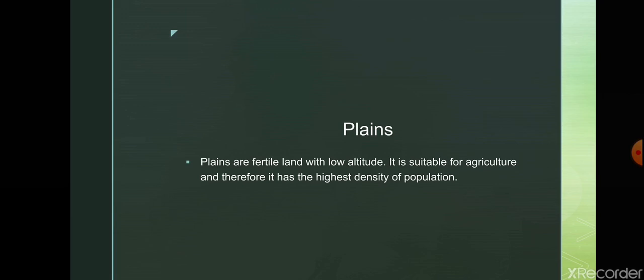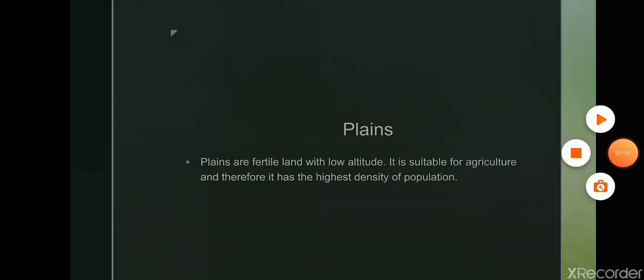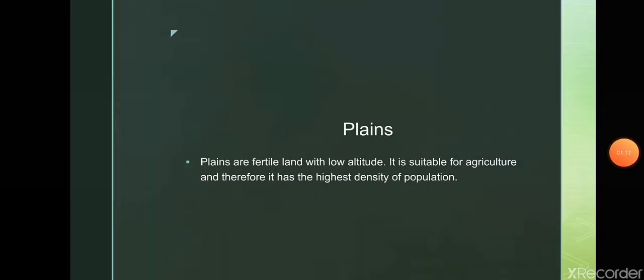The last form of land is plains. Plains are fertile flat areas with low altitude. Most plains have been formed by the deposition of alluvium brought down by rivers. For example, the Ganga and Brahmaputra in India bring most of the alluvial soil. Plains are also suitable for agriculture and other associated activities and hence have the highest density of population.